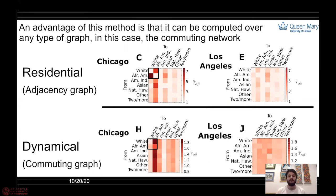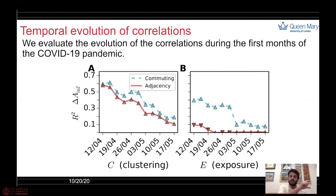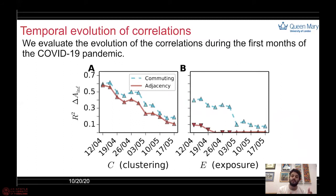From these matrices we built two different indices: the clustering index and the exposure index. Our objective is to assess if this clustering and exposure has any relation with the infection gap. Here I show, with the evolution of time, the correlation between the infection gap and each of these two indices. On the x-axis you have the temporal evolution, and on the vertical axis the R-squared between each metric and the infection gap. The sign of this correlation is indicated by the triangles, meaning that the more clustered African-American communities are, the higher the infection gap. The correlations remain high, at least for the beginning of the pandemic, in which no lockdowns or travel restrictions were put in place.